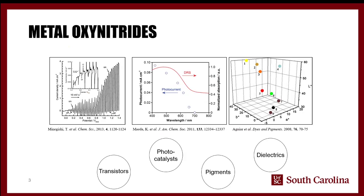Metal oxynitrides have proven pretty useful in this area. They're used in a wide range of applications — transistors, photocatalysts, pigments, and dielectrics. A famous example is aluminum oxynitride, known as ALON, A-L-O-N, also known as transparent aluminum. Star Trek famously had an episode where they talked about transparent aluminum as a futuristic material — and it turns out we can actually make transparent aluminum in the form of aluminum oxynitride. It's transparent but very strong, with a lot of different uses. That's a well-known example of an oxynitride material, but there are many others.